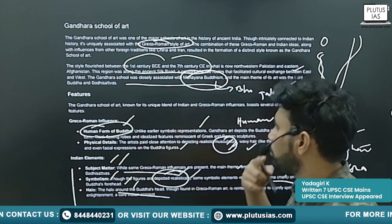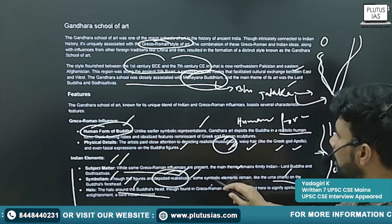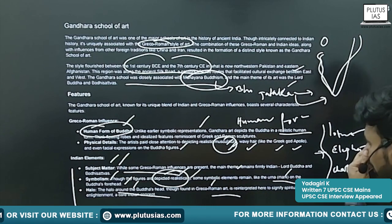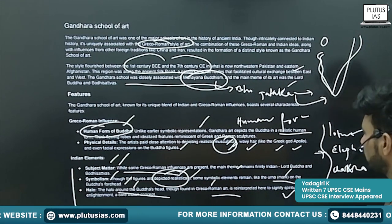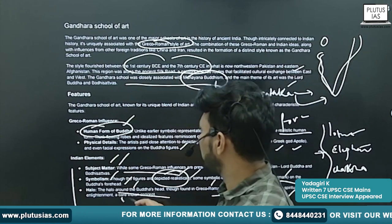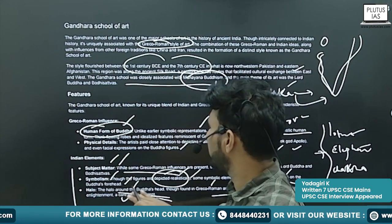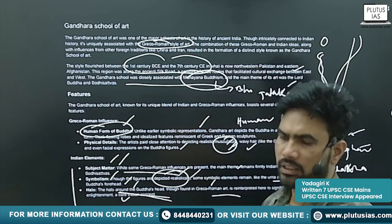You will see a halo around Buddha's head. This is also found in the Greco-Roman art. Here it is interpreted to signify spiritual enlightenment — it is a core Indian tradition.